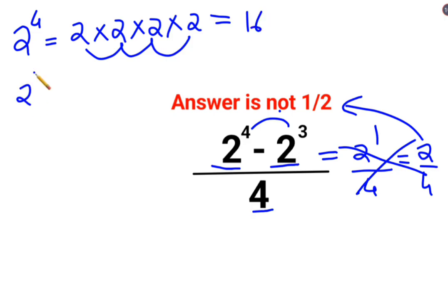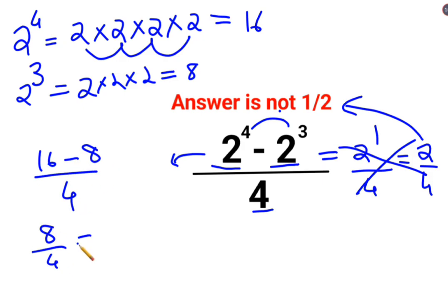Similarly, 2 raised to 3 can be written as 2 multiplied by 2 multiplied by 2, which is 8. So this eventually comes down to 16 minus 8 upon 4, which is 8 upon 4. The answer is 2.